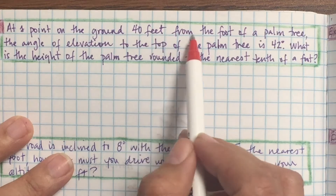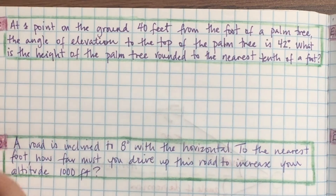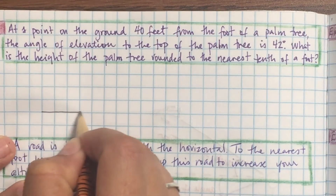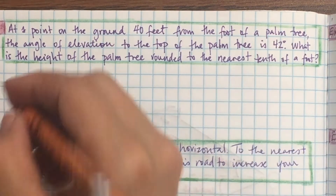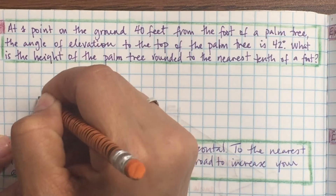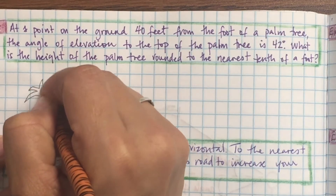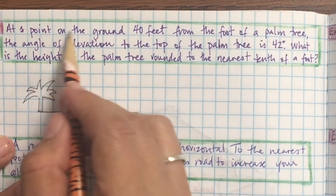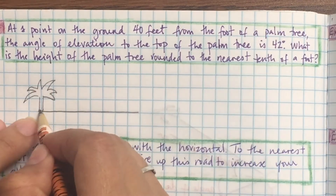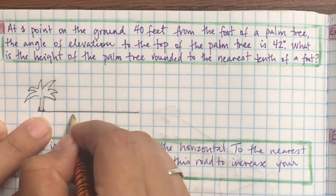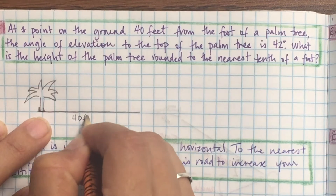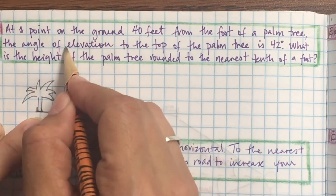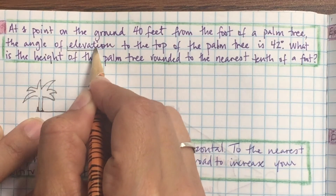It says: at a point on the ground 40 feet from the foot of a palm tree. So let's draw a palm tree. I'll just read a sentence and do it — I'm going to draw a palm tree, and then 40 feet from that palm tree is a point. So here's my little palm tree. From the base of my tree, 40 feet is some point.